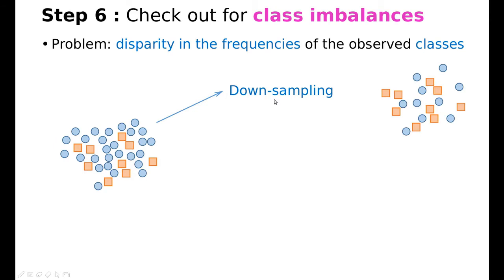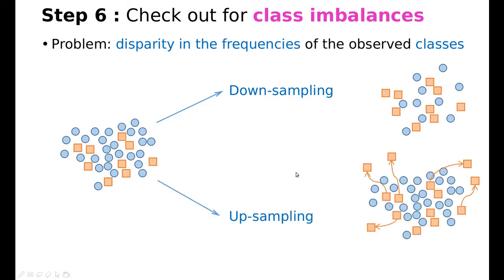The first one is called downsampling, which basically means that we are going to drop some of the blue cases. The most rational way to do that would be to drop out layers, but sometimes we don't know anything about the data, so we should do some kind of random sampling of this distribution. On the other hand, it's a kind of pity, especially for small datasets, that we are dropping some information. So we can do what they call upsampling, which means that we are going to make copies of the orange cases in order to have more or less the same number in each one. So let me show you how to do this in R.